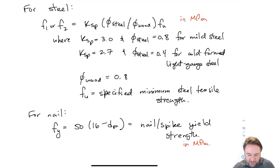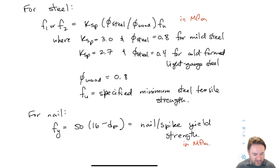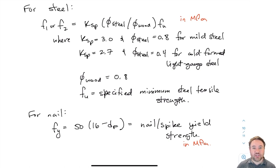We have looked at individual nail strength in this video — the Johansson yield equations, all the different modes to consider, and all the inputs for those. In the next video, which will finish up this topic of lateral strength of nailed connections, we are going to calculate the total resistance of the nailed connection, adding up all the nails properly, including modification factors and other potential modification factors.